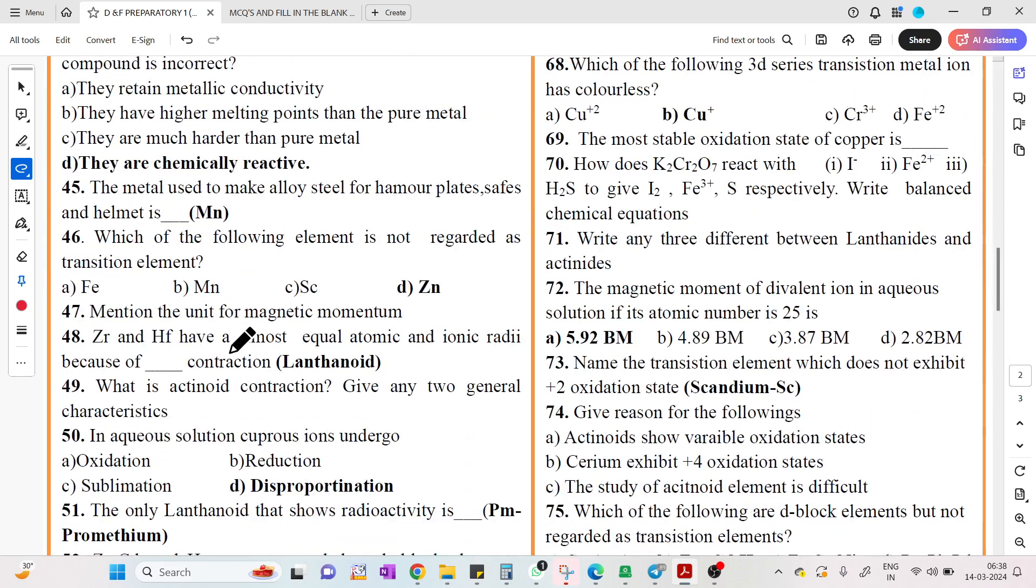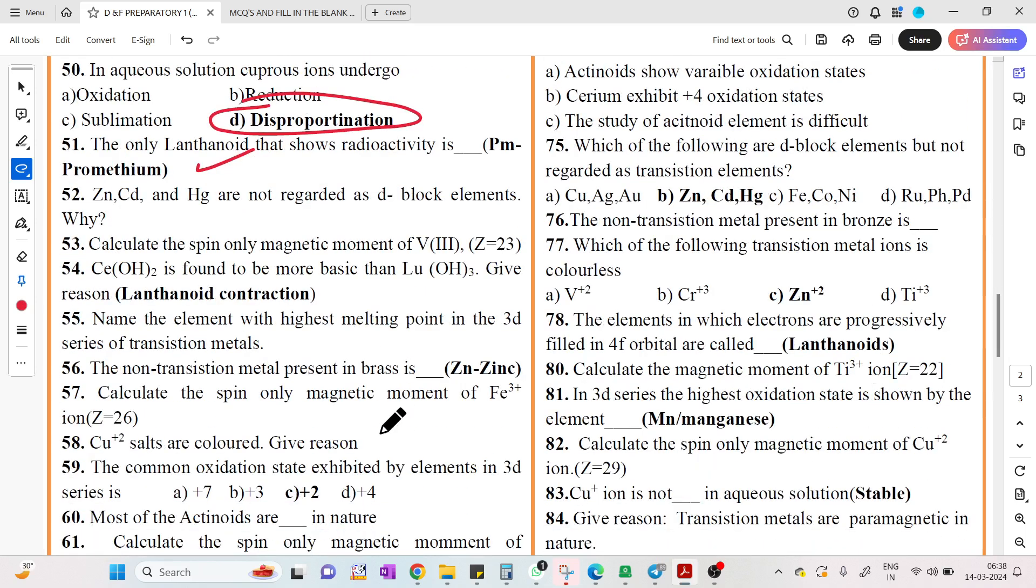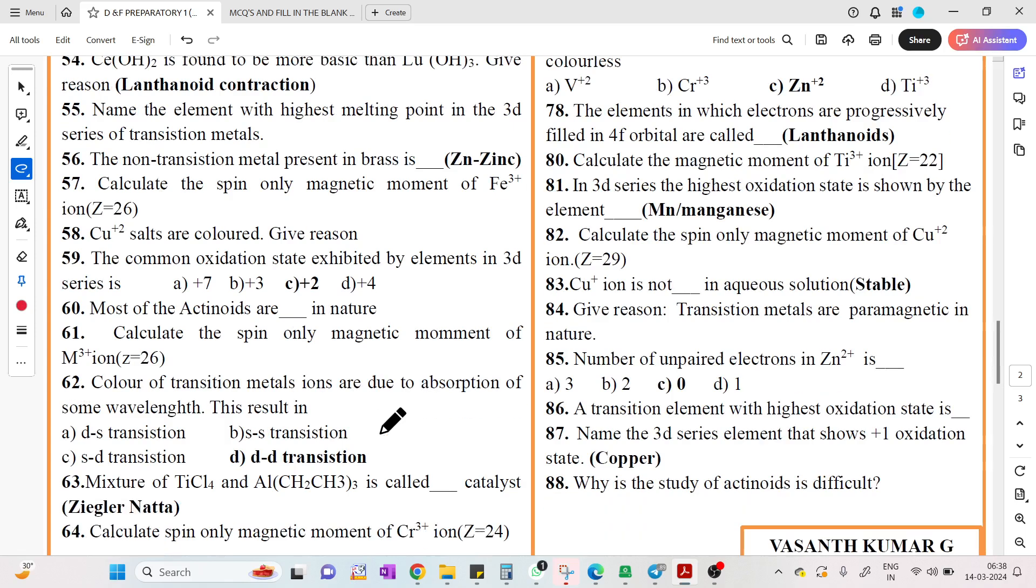Last year's repeated question: the metal which makes alloy steel for armor plates, safes, and helmets is Mn. Which element is not regarded as transition element? Zinc. Zirconium and hafnium have almost equal atomic and ionic radii because of lanthanide contraction. In aqueous solution, Cu+ ion undergoes disproportionation reaction. The only lanthanide showing radioactivity is Promethium.